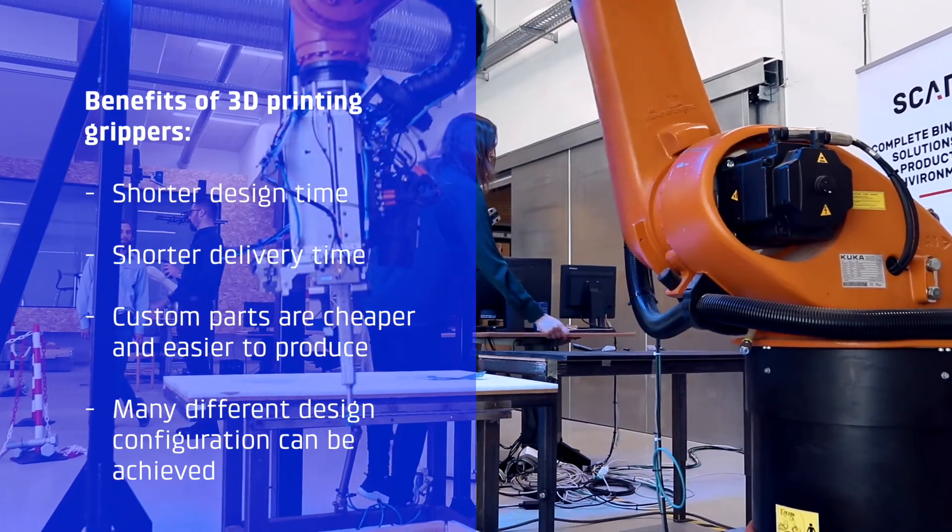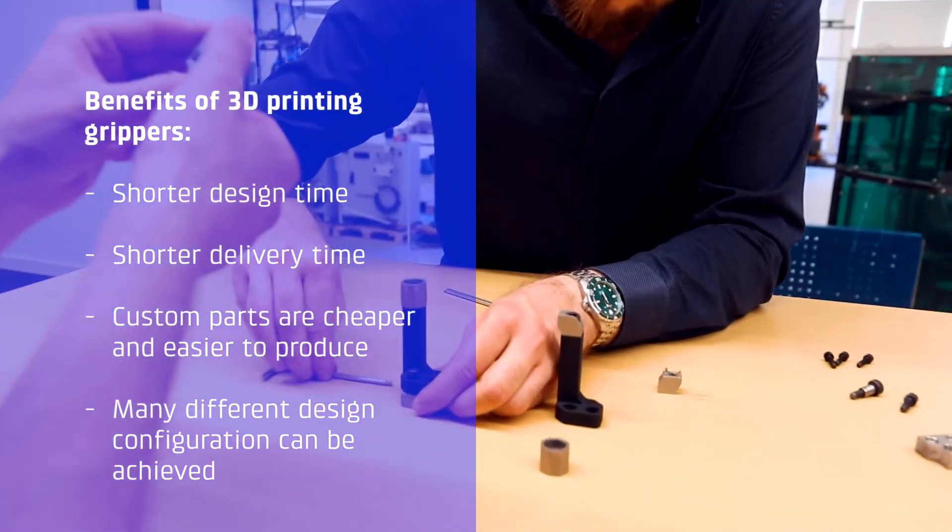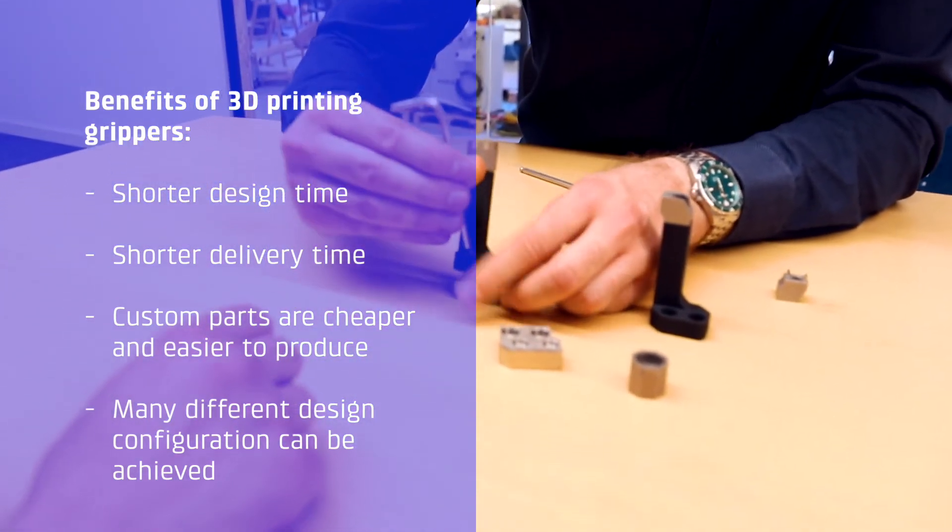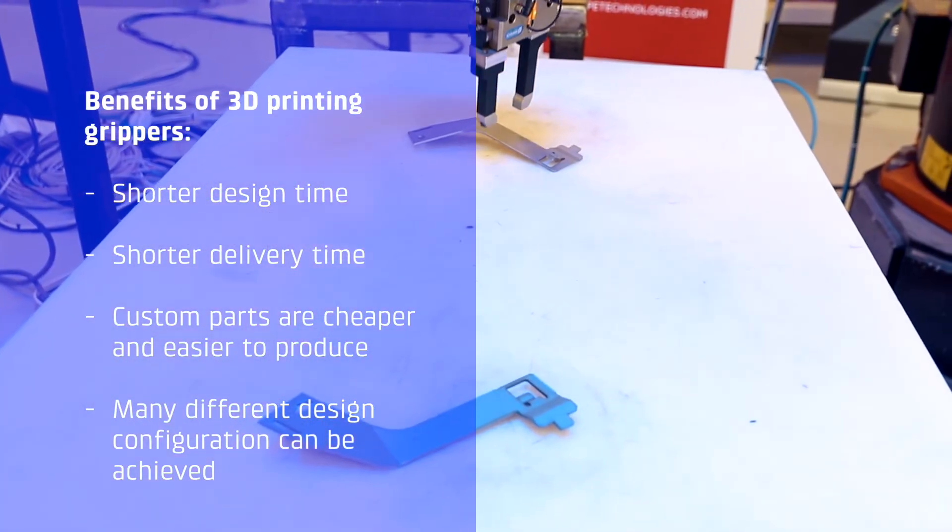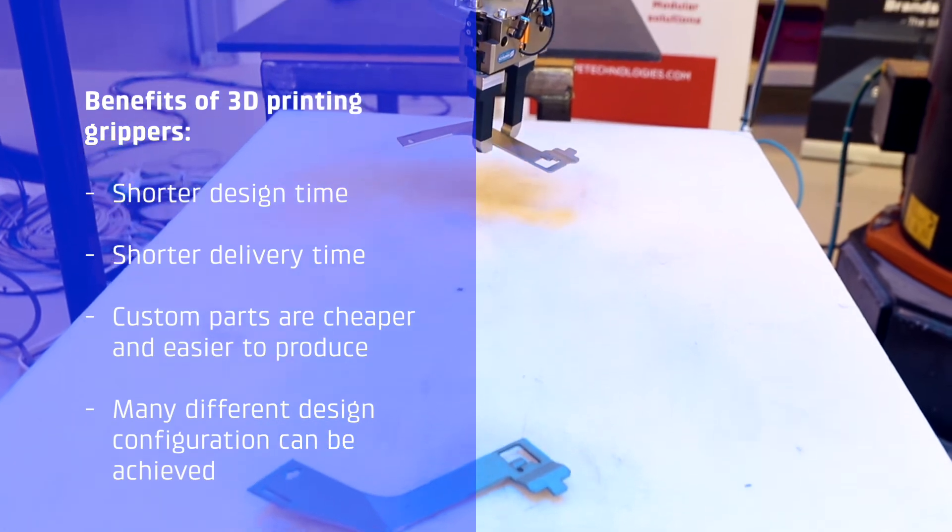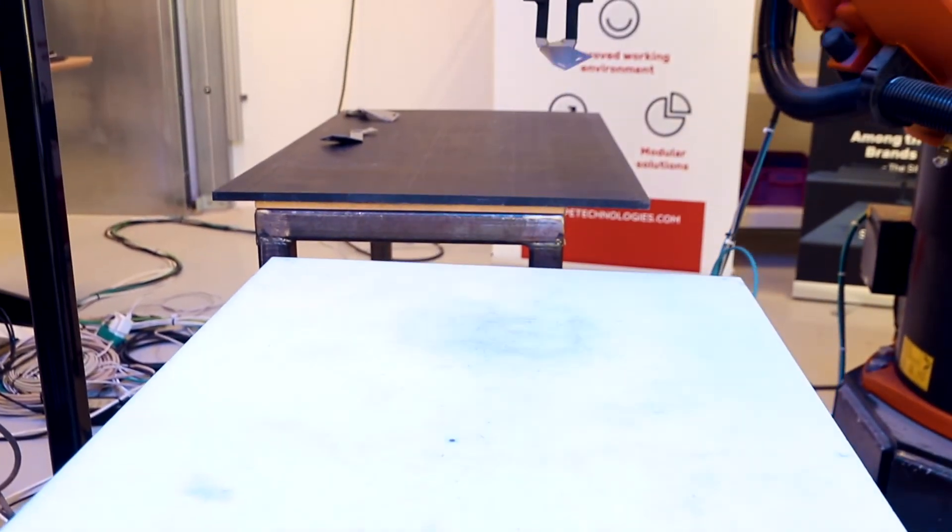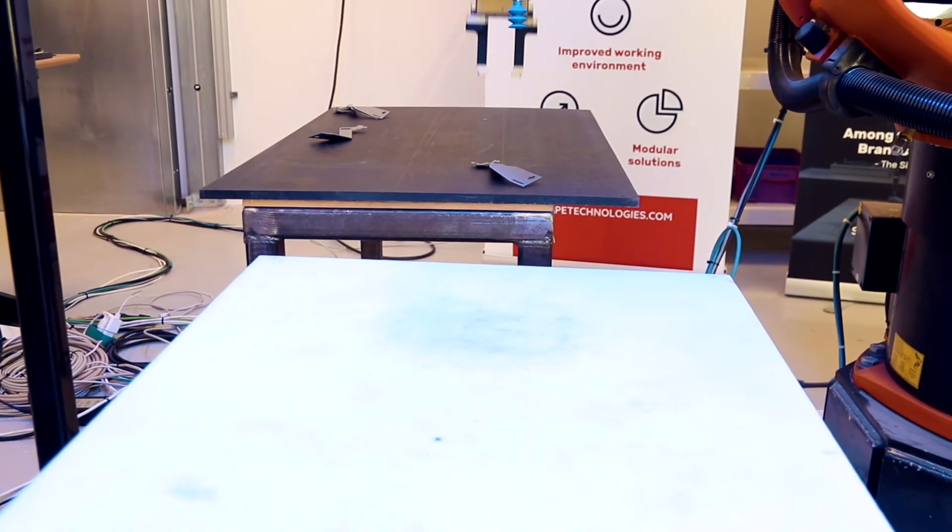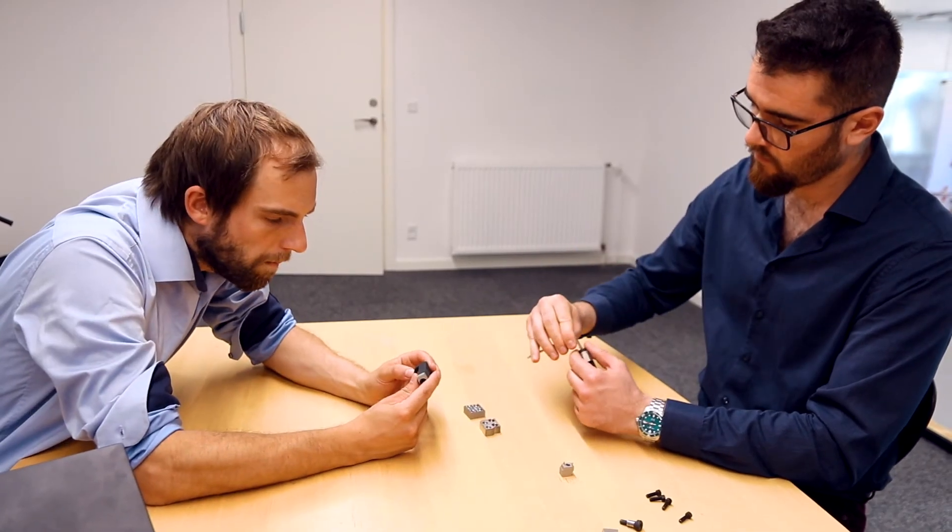Using 3D printing you can get the right materials. We use 316L stainless steel for these components with a special surface treatment where you surface harden the material so it's a ductile material but you have the hardness in the surface which means you can avoid wear in these setups.